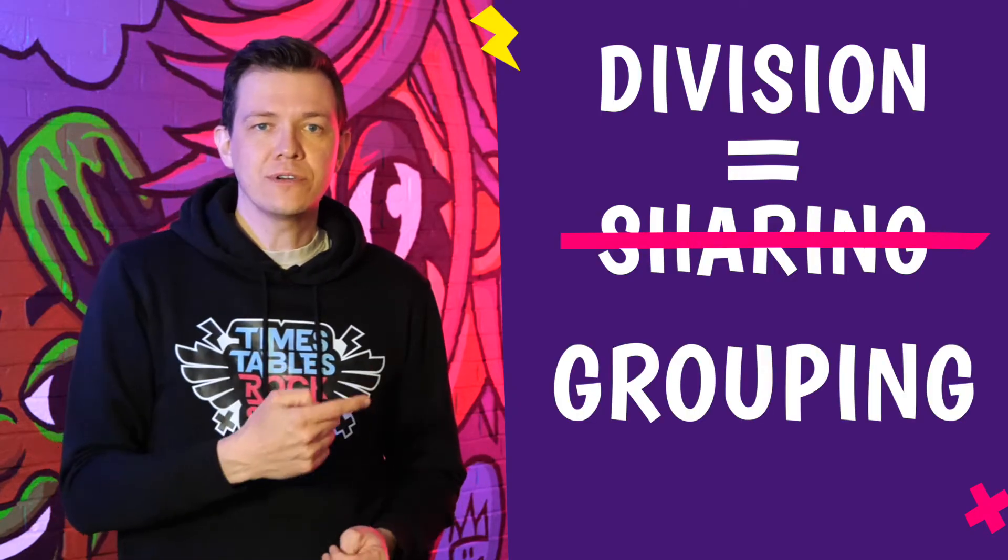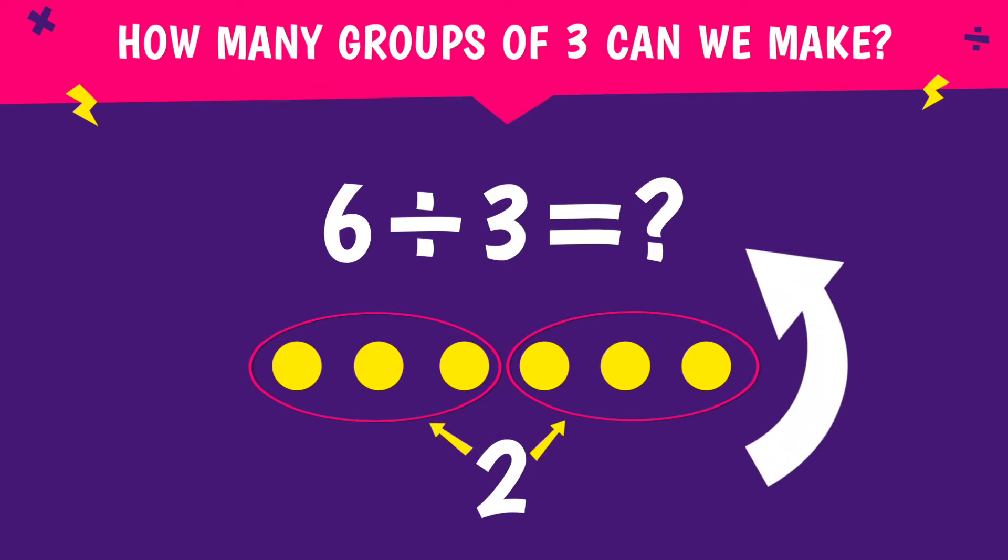Let's look at this question: six divided by three. How many groups of three can we make from six? So that's one group of three, two groups of three. We were able to make two groups. So six divided by three is two.